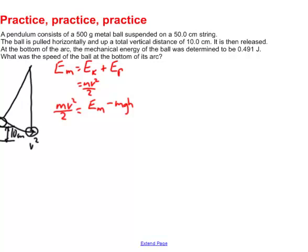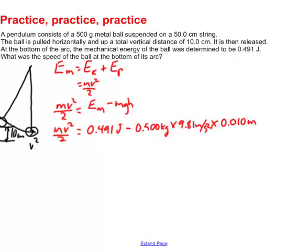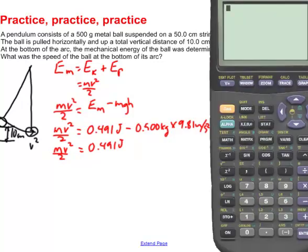Putting in our numbers: mv squared divided by 2 equals 0.491 joules minus the potential energy. The mass of 500 grams converts to 0.500 kilograms, multiplied by 9.81 meters per second squared, multiplied by the height — 10 centimeters converts to 0.010 meters. Using the calculator: 0.5 times 9.81 times 0.01 gives 0.04905 joules.